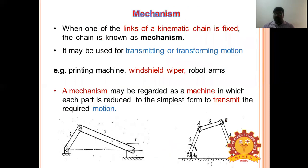What is a mechanism? When one link of a kinematic chain is fixed, the chain is known as a mechanism. It may be used for transmitting or transforming motion. Examples include a printing machine, typewriter, windshield wiper, and robot arms.